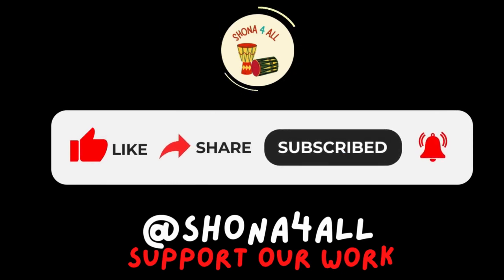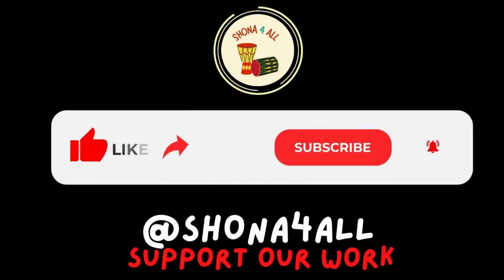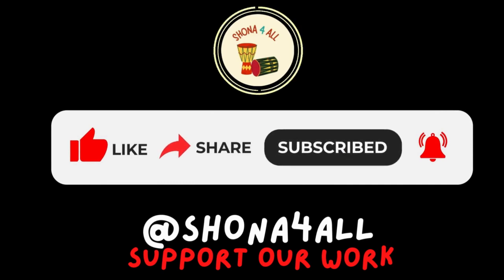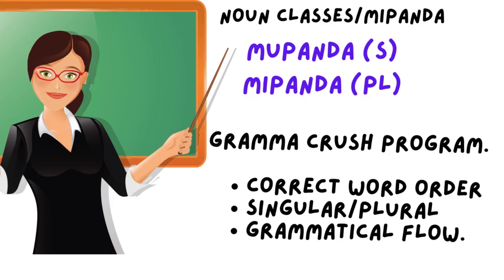Remember to subscribe to the channel and turn on the notification bell so that you don't miss future videos, which we post once a week. So without further ado, let's begin. The Shona word for noun class is mupanda (singular) or mipanda (plural). Basically, mipanda is a grammar framework which will help you learn the correct word order in phrases and sentences, how to convert nouns from singular to plural, and also the correct grammatical flow of words.